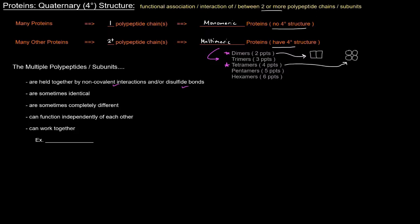Also the multiple peptides or subunits that are part of a protein, they're sometimes identical and then other times they're completely different. They're not related at all. They can also function independently of each other, but they can also work together.